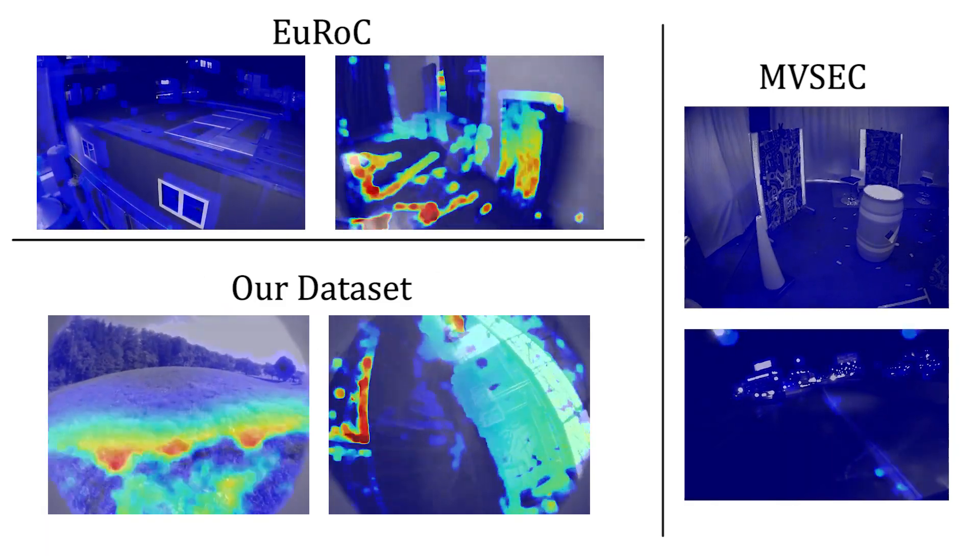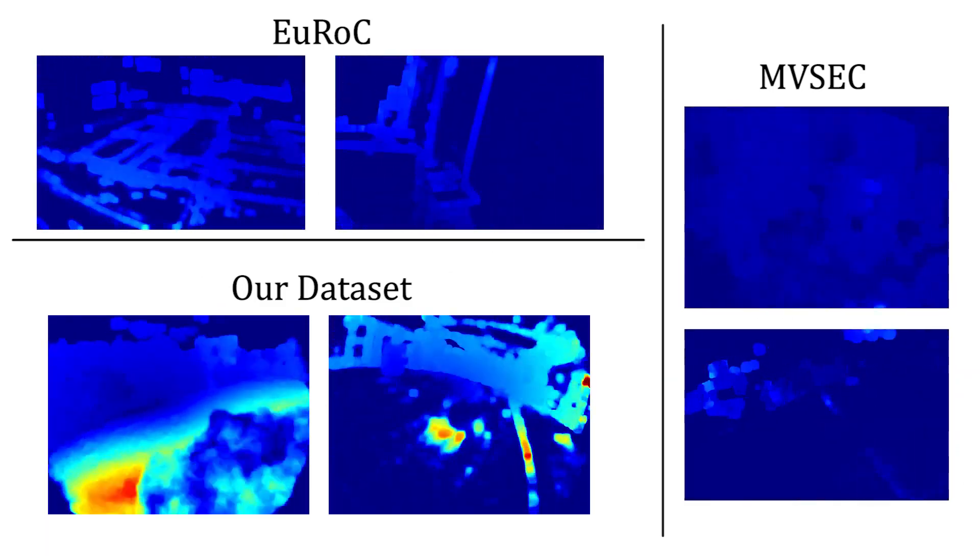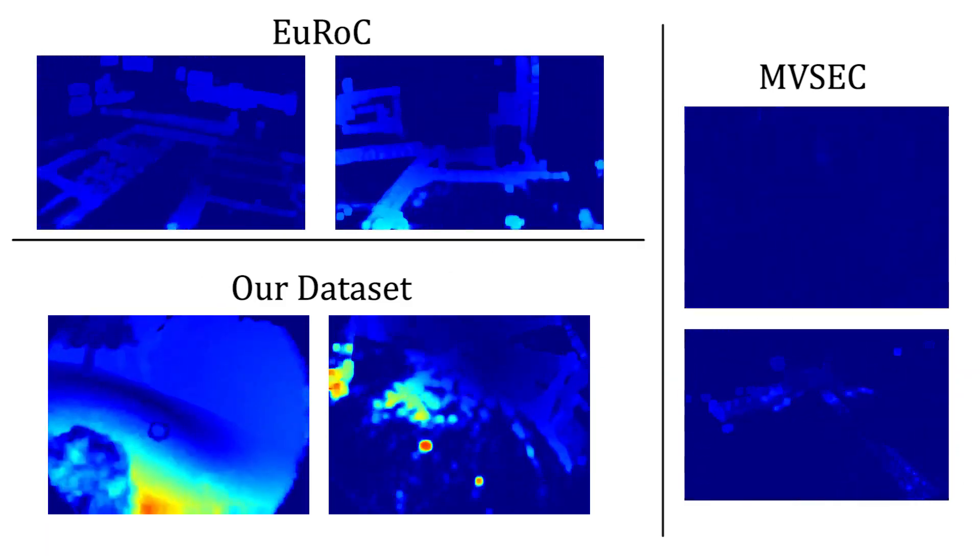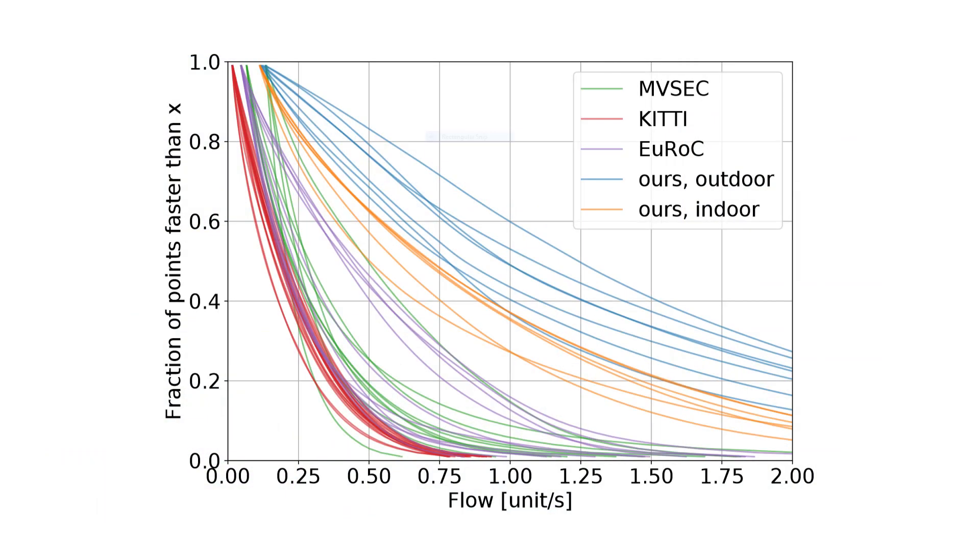Here, the optical flow is shown with blue meaning low and red meaning high optical flow. We propose that the distribution of optical flow in the scene is a more useful metric than the velocity of the sensors when considering the challenge for state estimation.